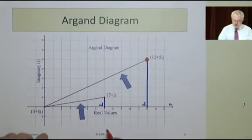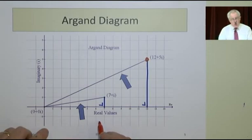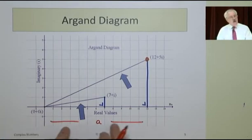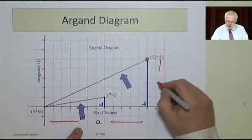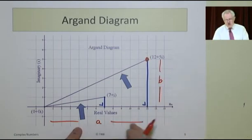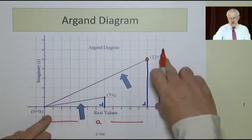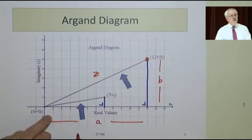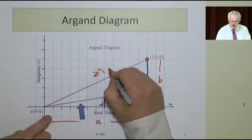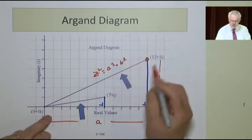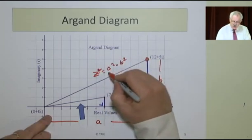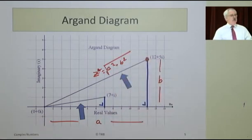And it's given by the formula square root of a squared plus b squared. And that shouldn't surprise us because this is just your old days, we would have called that x and we would have called this y, but we now call it a and b. And a squared plus b squared should give us z squared, so z would be the square root of it.